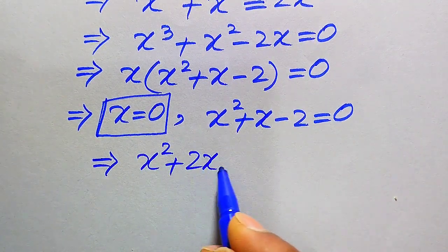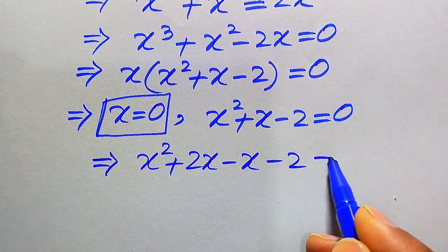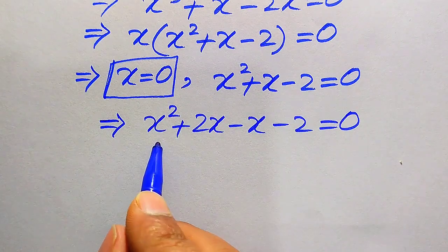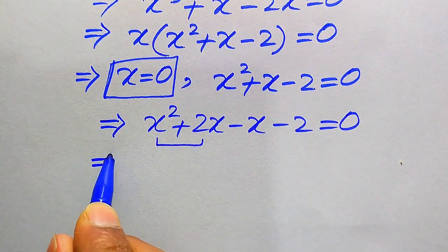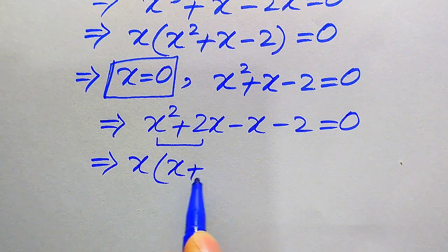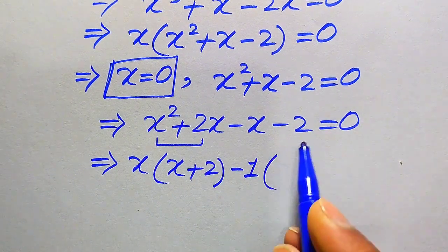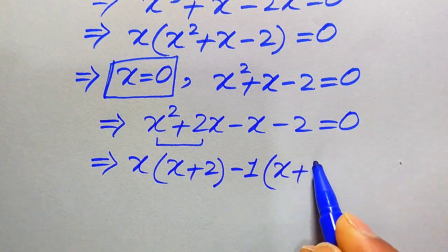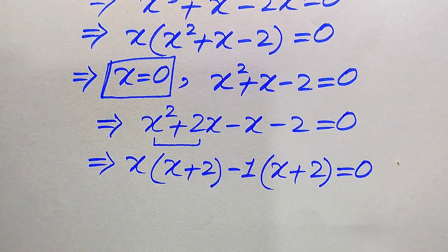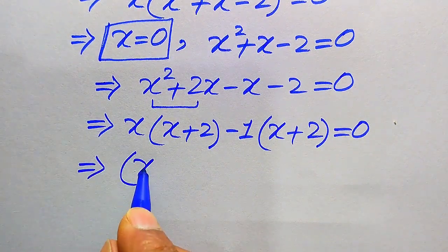From the first two terms we take x as common and get the remaining values as x + 2. From the last two terms we take −1 as common and get the remaining values as x + 2. This whole equation equals 0.